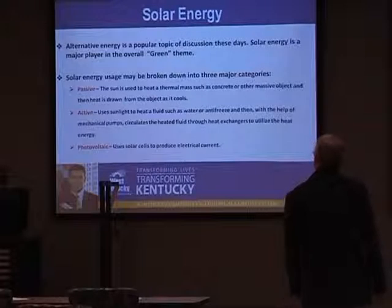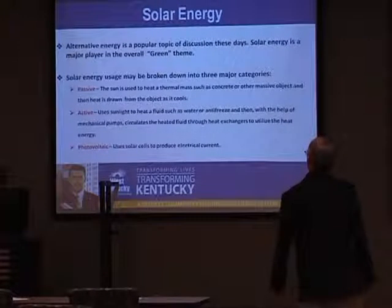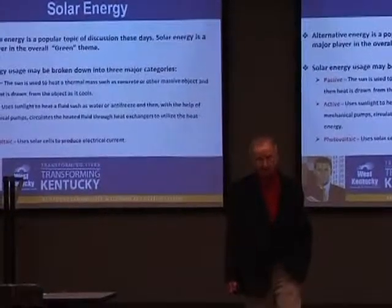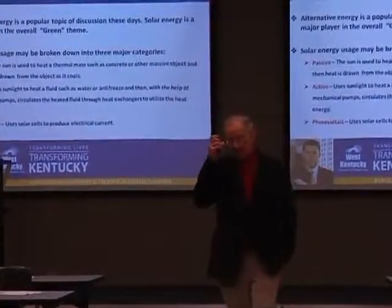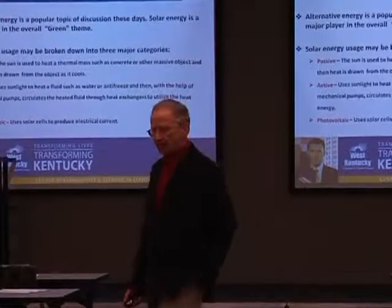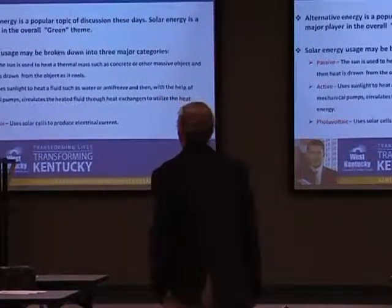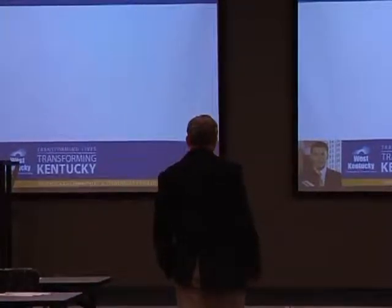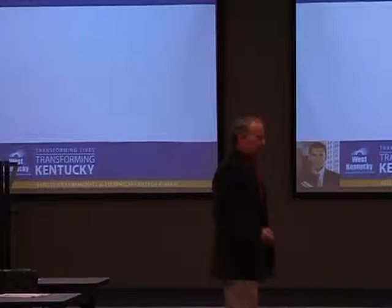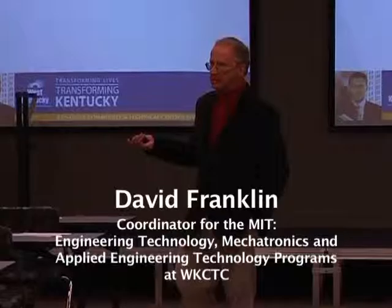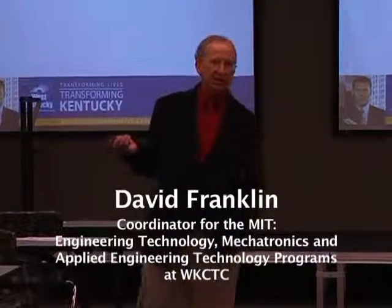Last is photovoltaic — that's the one we're focused on. This uses solar cells to produce electrical current. The term photovoltaic comes from 'photo,' which means light, and a voltage being produced. As with a lot of engineering and technical concepts, there's good news and bad news.